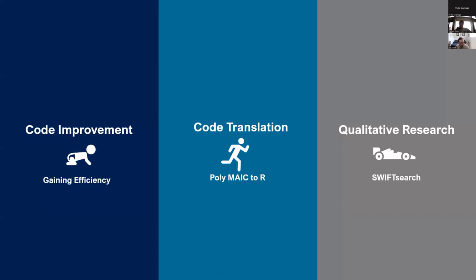These are the three use cases I'm going to talk about. One is code improvement — thinking of different applications or different approaches in code, gaining efficiency. I'm going to talk about code translation, which I hope speaks to some of the polyglot conversation I've seen a couple of different times — specifically a function I took from SAS to R. And then the most risky is: can you extend your abilities using this? An example of a somewhat silly but informational application — making semantic search.